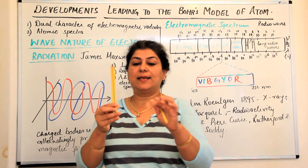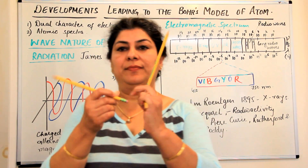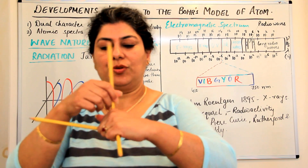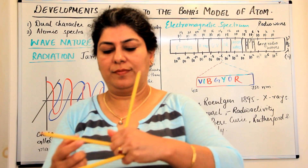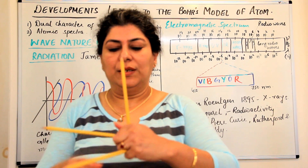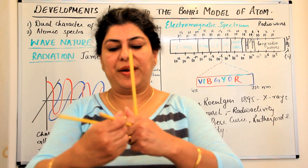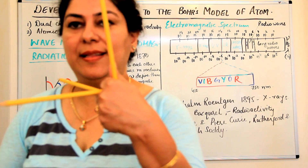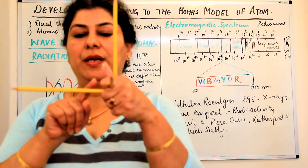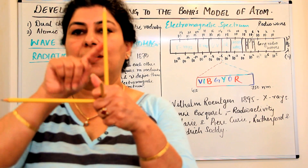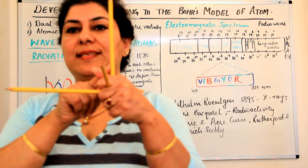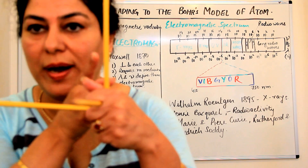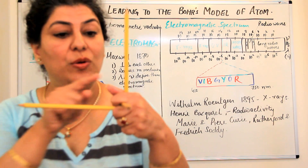Let us assume these are the three axes — I am using three pencils to explain. The three axes are at right angles to each other: the x-axis, the y-axis, and the z-axis.